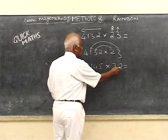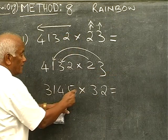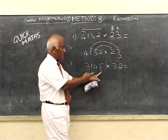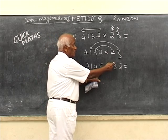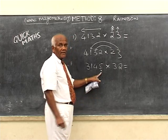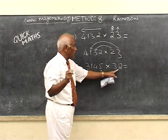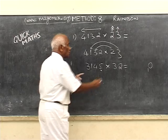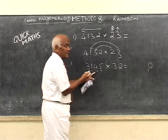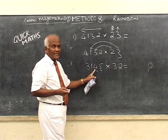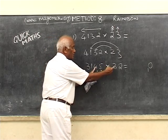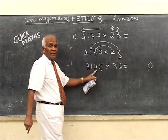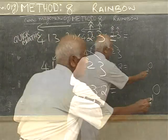Starting from the right side — 2 starts multiplying 5: 2 fives are 10. 3 has nothing to multiply, so only 10. Put 0, carry 1. Now 2 moves to the next digit: 2 fours are 8. 3 comes to the previous digit: 3 fives are 15. 15 plus 8 is 23, plus 1 carried is 24. Put 4, carry 2. Now 2 goes to 1: 2 ones are 2. 3 fours are 12. 12 plus 2 is 14, plus 2 carried is 16. Put 6, carry 1.